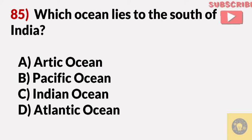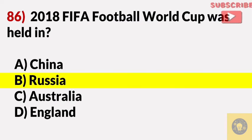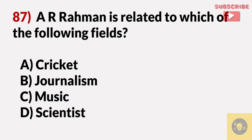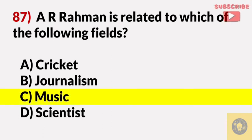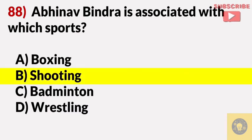Which ocean lies to the south of India? Answer C, Indian Ocean. The 2018 FIFA World Cup was held in? Answer B, Russia. A.R. Rahman is related to which of the following fields? Answer C, music. Abhinav Bindra is associated with which sport? Answer B, shooting.